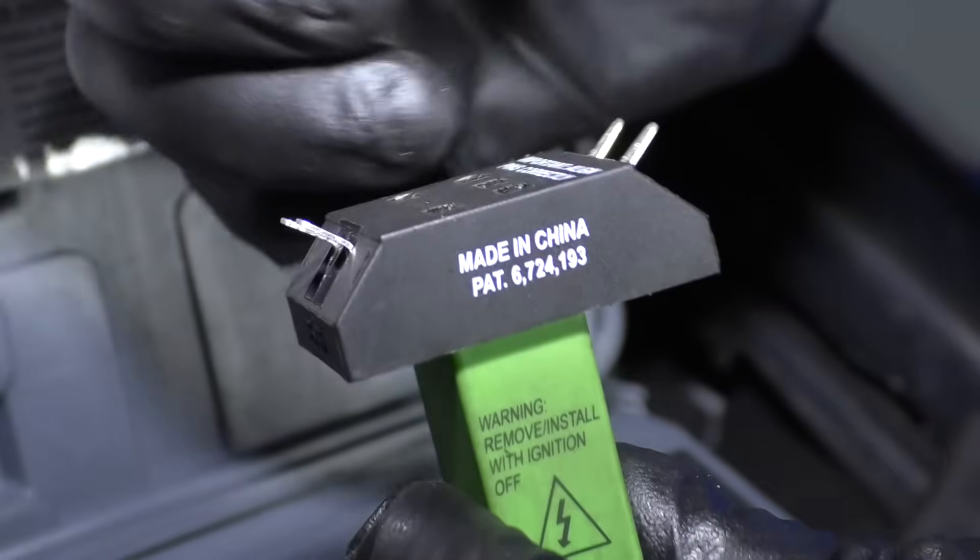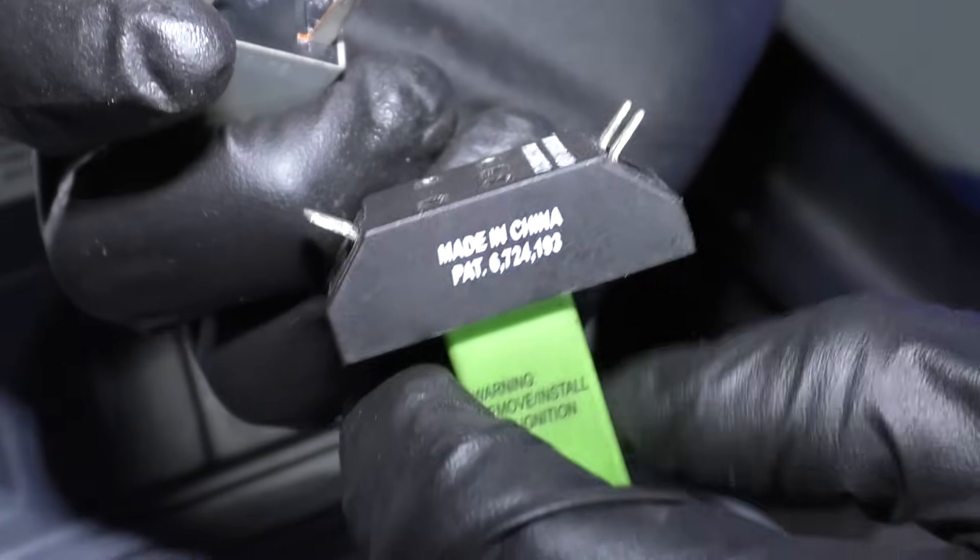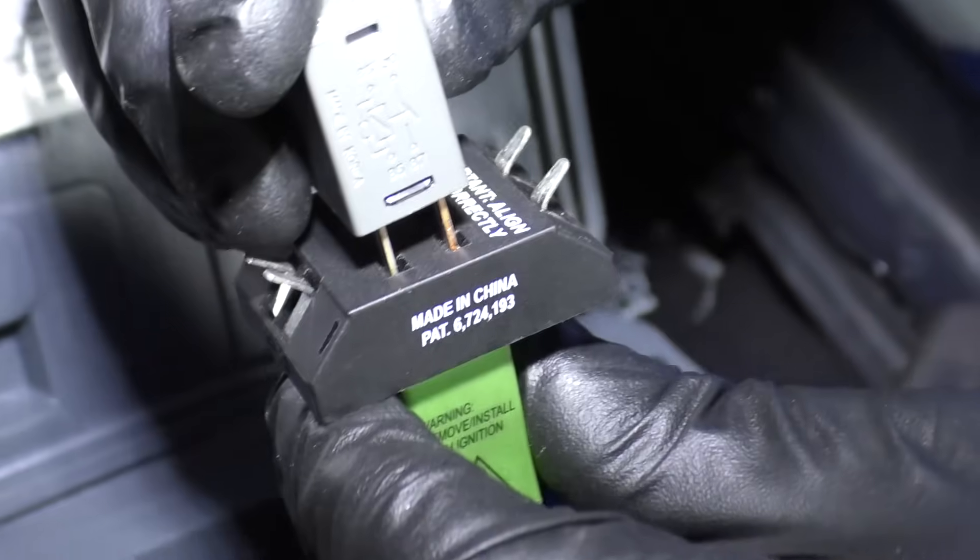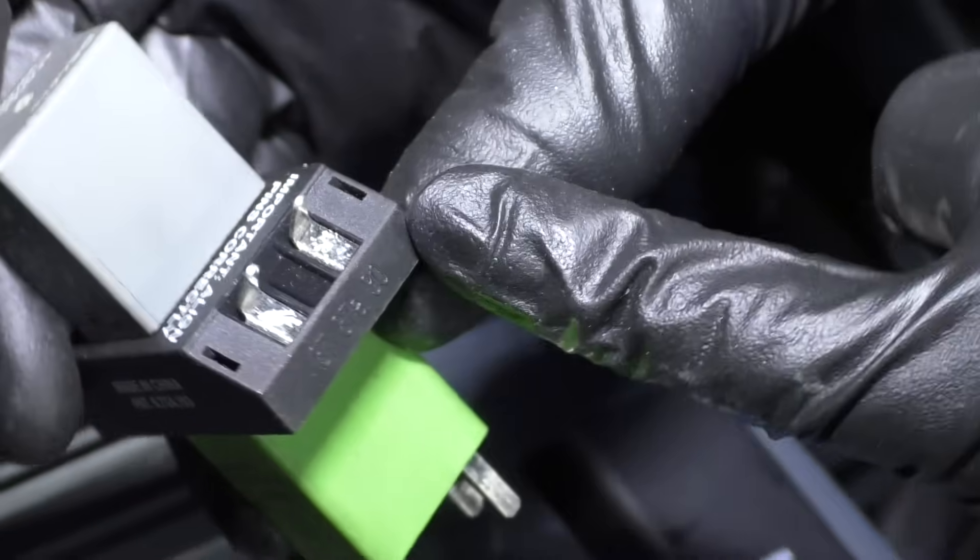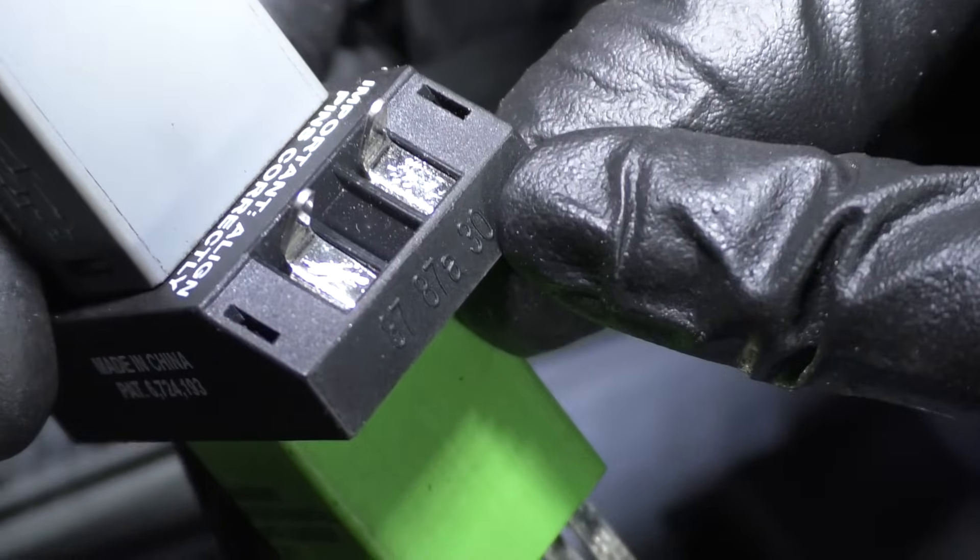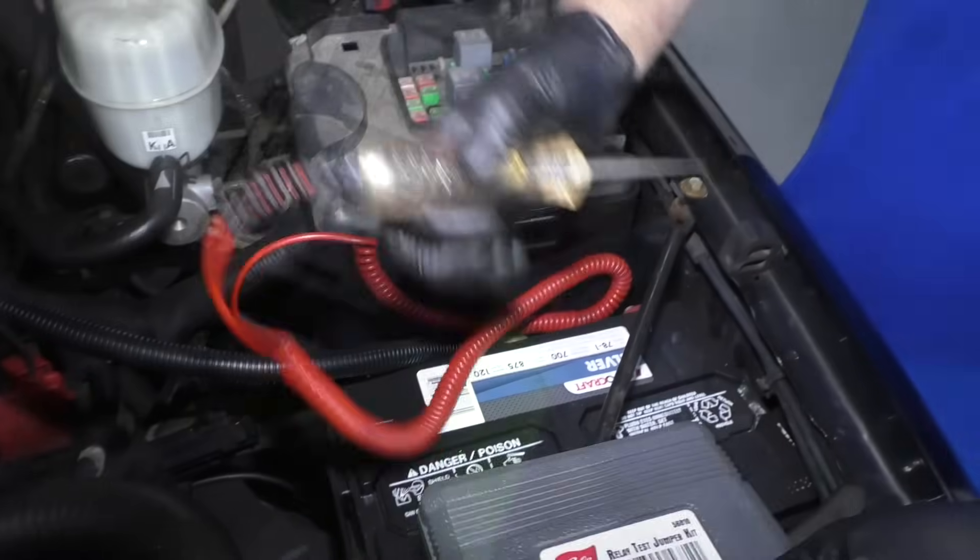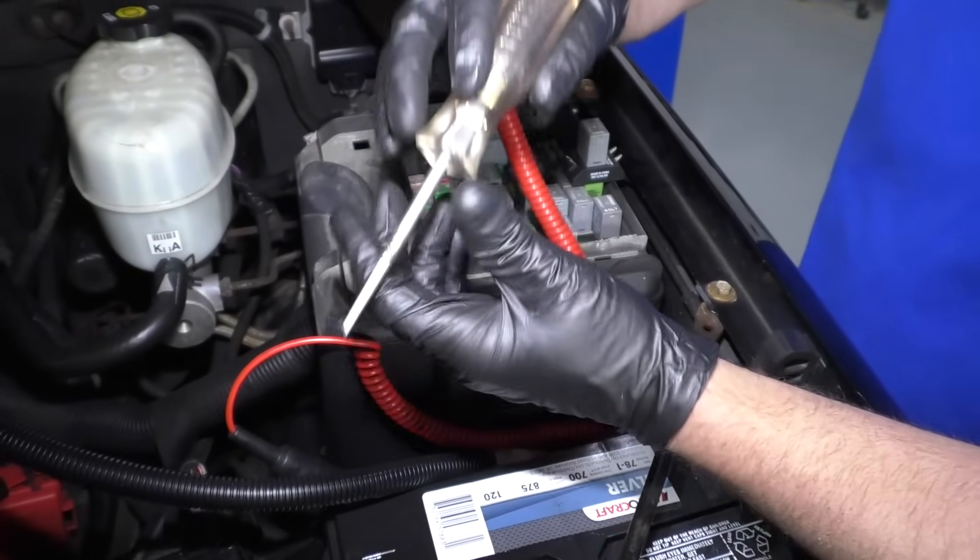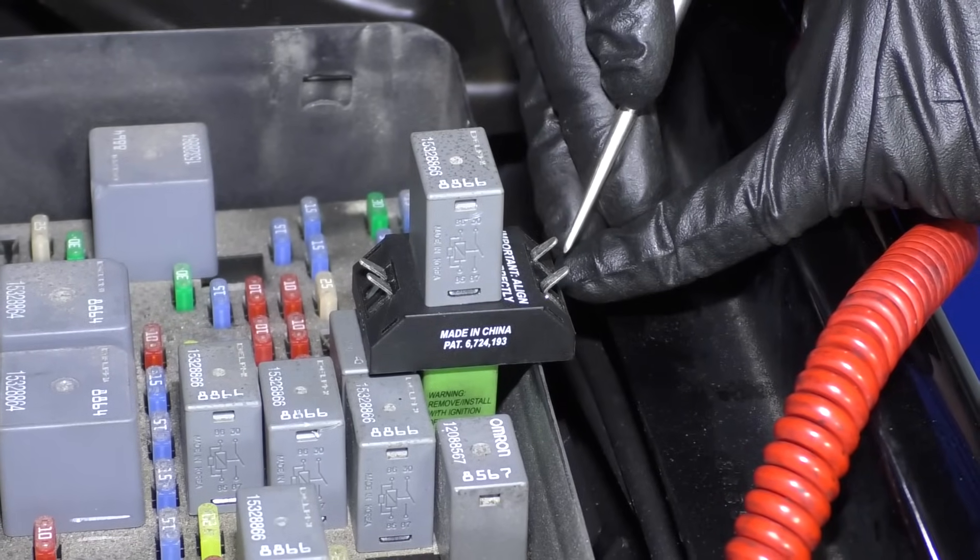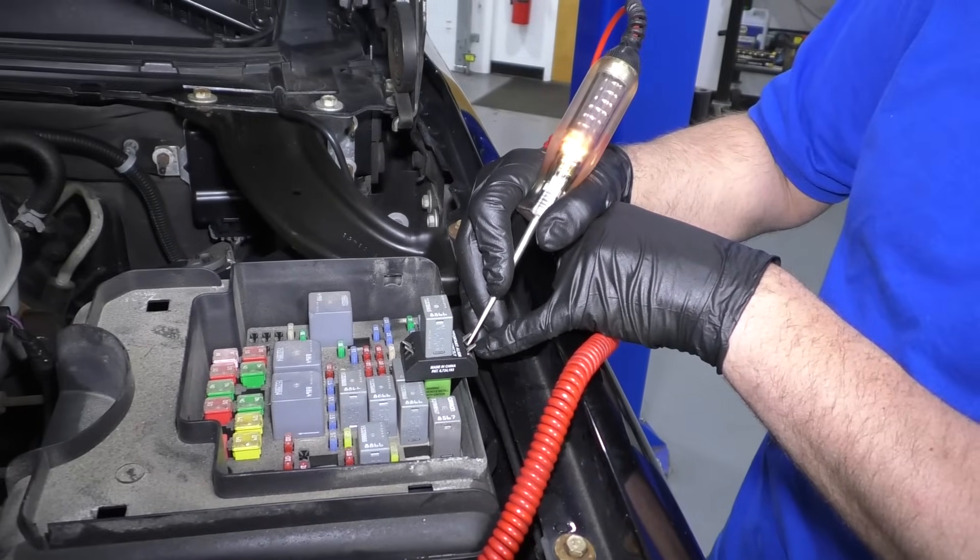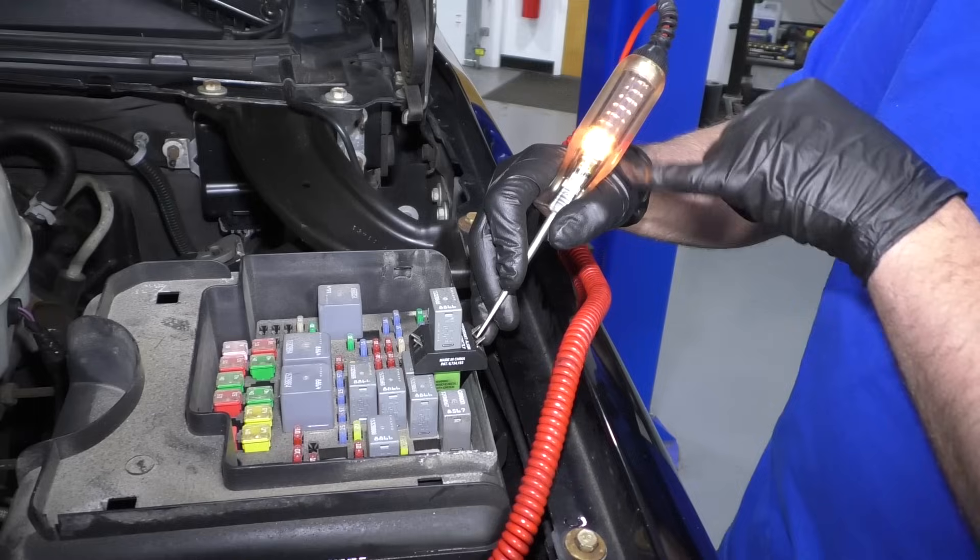This is the relay tester we're going to use. So relay's going to go in like this. And there's our number 30 and 87. Then we can take a test light, and we can see if the circuit number 30 is getting power. And we are getting power there.